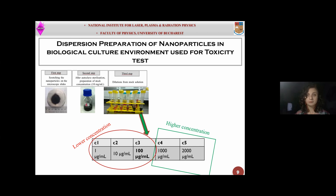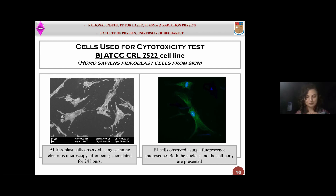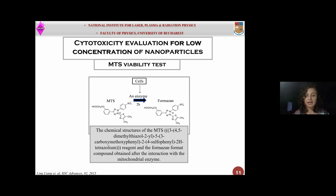I based my study on the fact that in case of a nuclear accident, nanoparticles interact firstly with human skin. This is the reason why I chose fibroblast cells from human skin tissue. This cell line is called BJ ATCC and it is a standard cell line. In order to evaluate the cytotoxicity of tungsten nanoparticles, I used the MTS viability test.